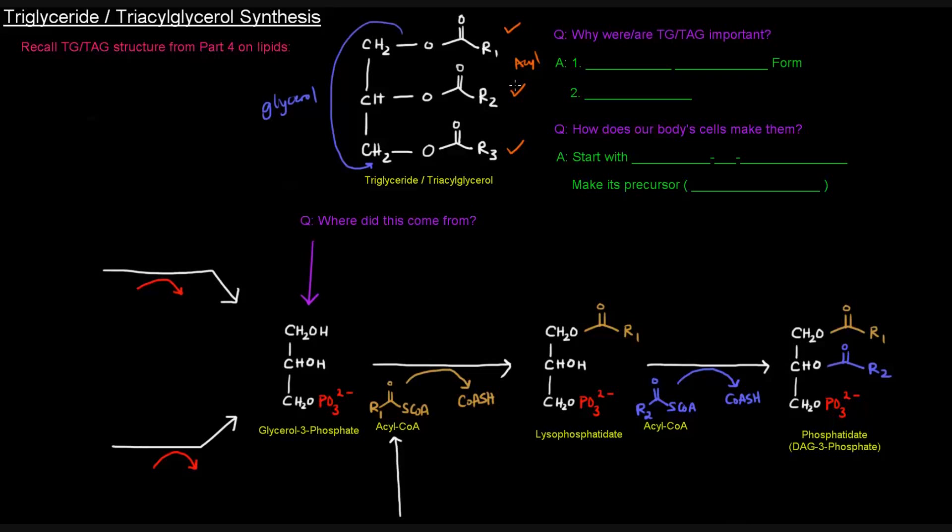We talked about why triglycerides or triglycerols are important. Primarily, they are an energy storage form. Triglycerols are the primary way that our cells store energy. They're also important for insulation, which helps keep animals warm. It's especially important for animals who hibernate in cold environments, like polar bears. So the question is, how do we make triglycerides? How do our body's cells make them?